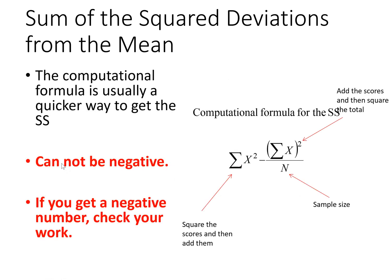There is what's called the computational formula for the sum of the squared deviations from the mean. This is a little bit faster if you're doing it by hand. It looks a little bit more intimidating, but it is a bit faster if you're doing this by hand, where you would basically take each score, square it, add it up, so get sum of the squared x's, and then subtract sum of x squared divided by the total number of scores.